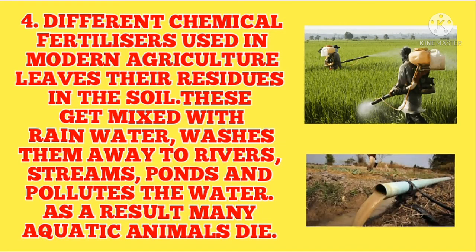Number four: different chemical fertilizers used in modern agriculture leave their residues in the soil. These get mixed with rainwater, which washes them away to rivers, streams, and ponds, polluting the water. As a result, many aquatic animals die.